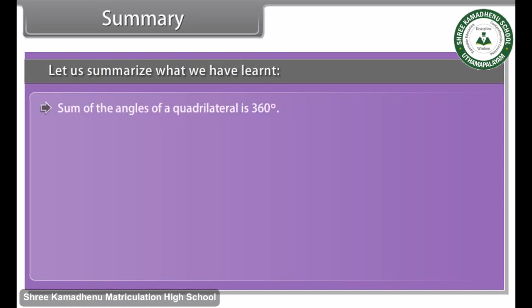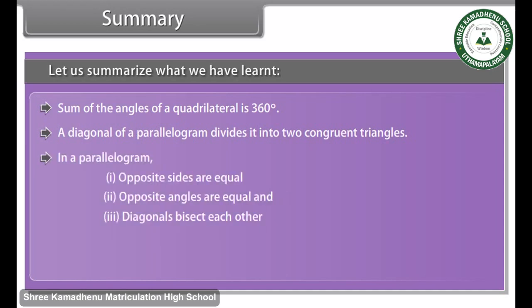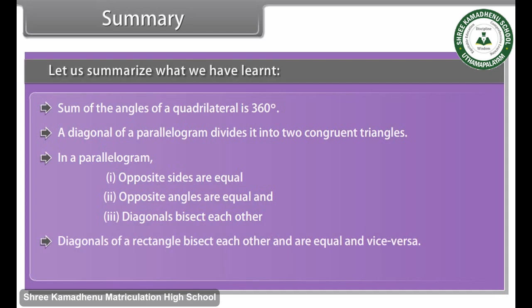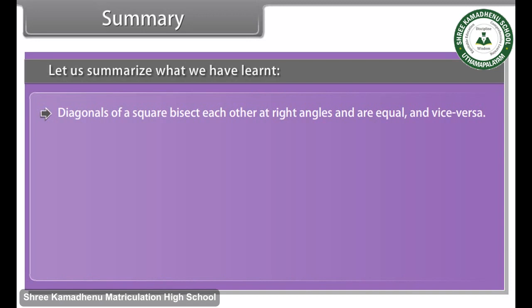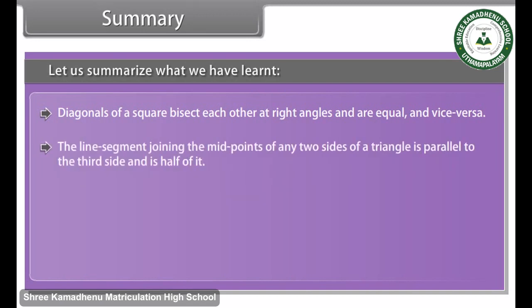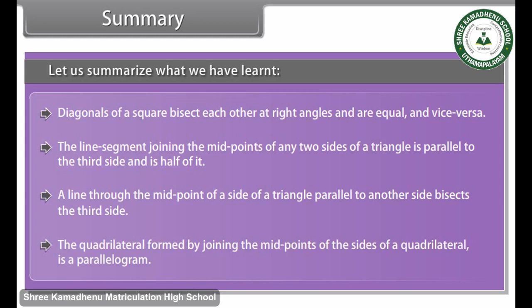Summary. Let us summarise what we have learnt. The sum of the angles of a quadrilateral is 360 degrees. A diagonal of a parallelogram divides it into two congruent triangles. In a parallelogram, opposite sides are equal, opposite angles are equal, and diagonals bisect each other. Diagonals of a rectangle bisect each other and are equal, and vice versa. Diagonals of a rhombus bisect each other at right angles, and vice versa. Diagonals of a square bisect each other at right angles and are equal, and vice versa. The line segment joining the midpoints of any two sides of a triangle is parallel to the third side and is half of it. A line through the midpoint of a side of a triangle parallel to another side bisects the third side. The quadrilateral formed by joining the midpoints of the sides of a quadrilateral is a parallelogram.